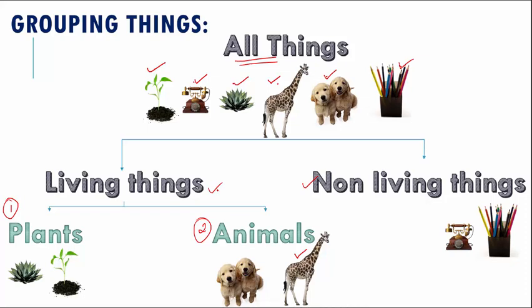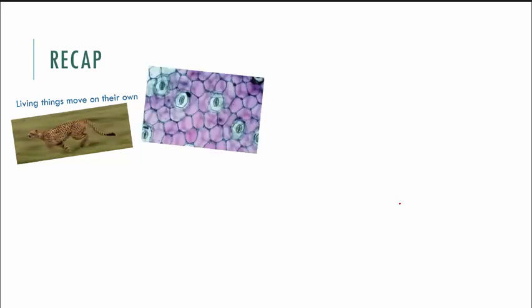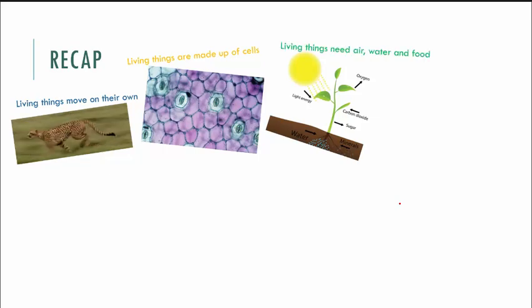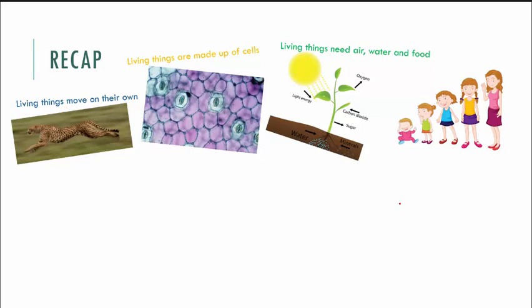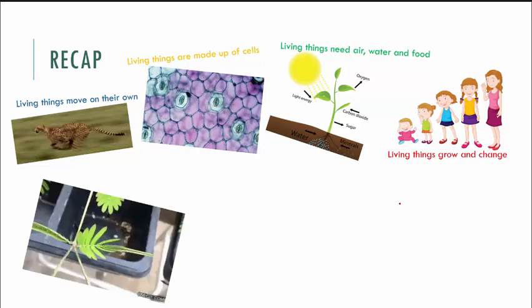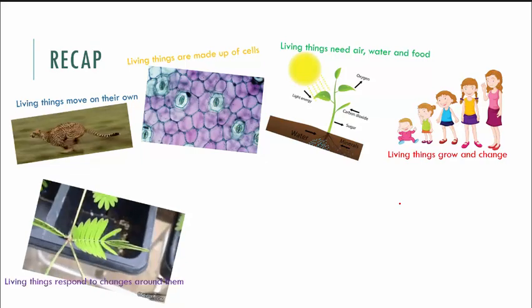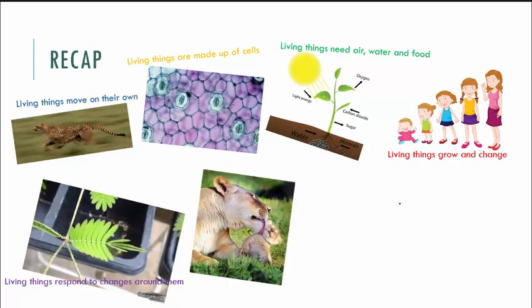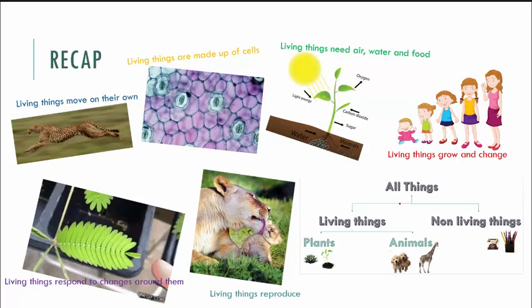With this, we come to the end of this chapter. Let us see a quick recap of what we studied. We first studied that living things move on their own. Then we saw that all living things are made up of cells. Then we saw that living things need air, water, and food for them to stay alive. Then we saw that living things grow and change. Then we saw a touch-me-not plant and how it changes — living things respond to the changes around them. Finally, we saw that all living things reproduce. And we spoke about grouping of things into various categories like living and non-living things.